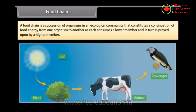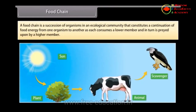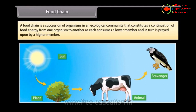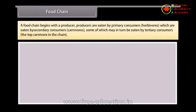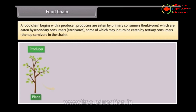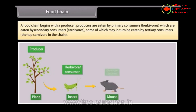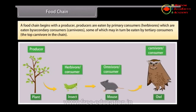Food Chain: A food chain is a succession of organisms in an ecological community that constitutes a transfer of food energy from one organism to another as each consumes a lower member and in turn is preyed upon by a higher member. A food chain begins with a producer. Producers are eaten by primary consumers (herbivores), which are eaten by secondary consumers (carnivores), some of which may in turn be eaten by tertiary consumers — the top carnivore in the chain.